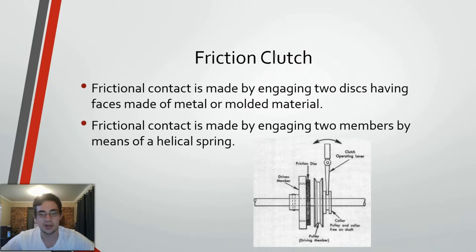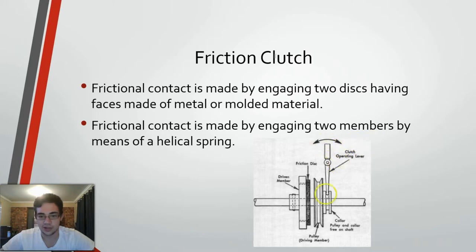A frictional clutch is made by engaging two discs having faces made of metal or molded material. It is also made by engaging two members by means of an electrical spring. A frictional clutch is mainly used in motor vehicles. In this example of a friction clutch, the clutch lever puts pressure onto the drive shaft or the pulley. Then using friction between the pulley and the drive member, the driven member will turn.